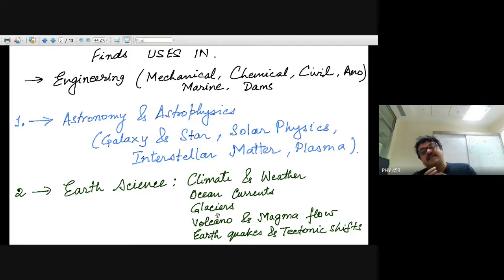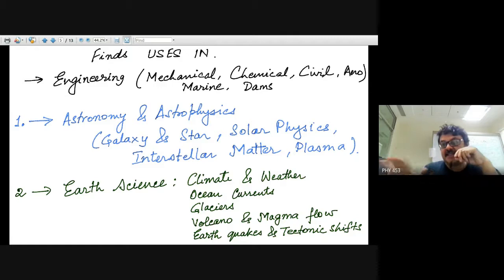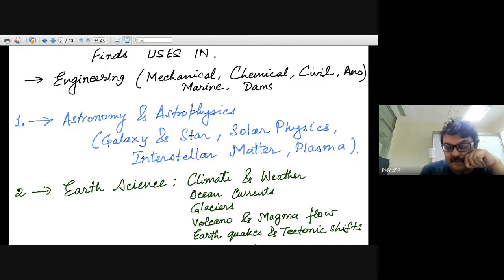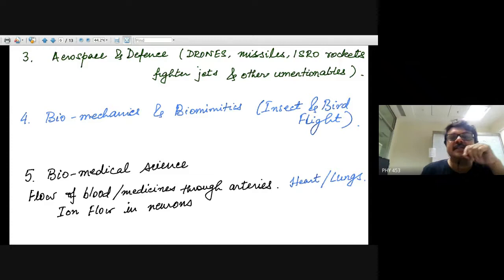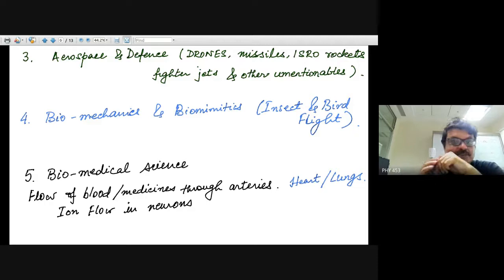Fluid mechanics is also relevant for earth science: climate and weather prediction, typhoons, ocean currents, glaciers treated as viscoelastic fluids, volcano and magma flow, earthquakes, and tectonic shifts. The surface of the earth is fluid-like — not exactly Newtonian fluid mechanics, but a basic knowledge is required. Aerospace and defense applications include drones, missiles, rockets, fighter jets, and even chemical weapons — where you need to know at what rate chemicals will mix.